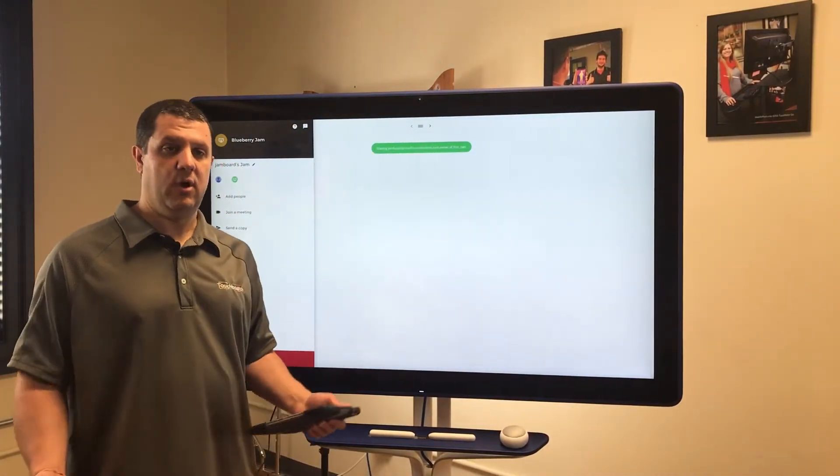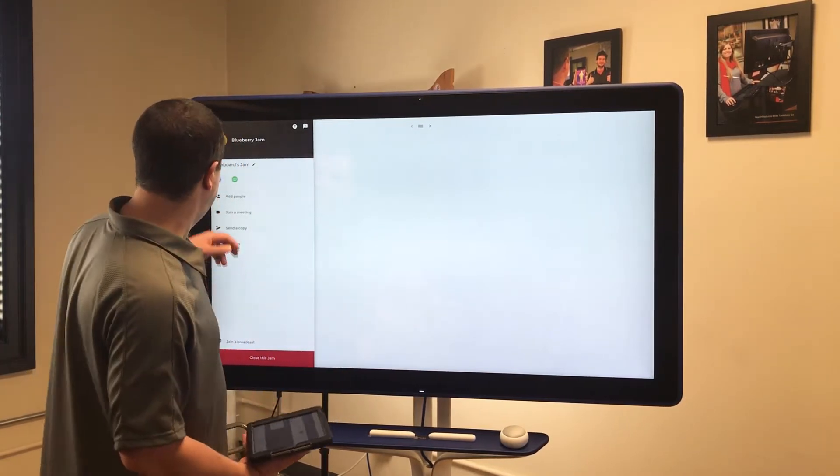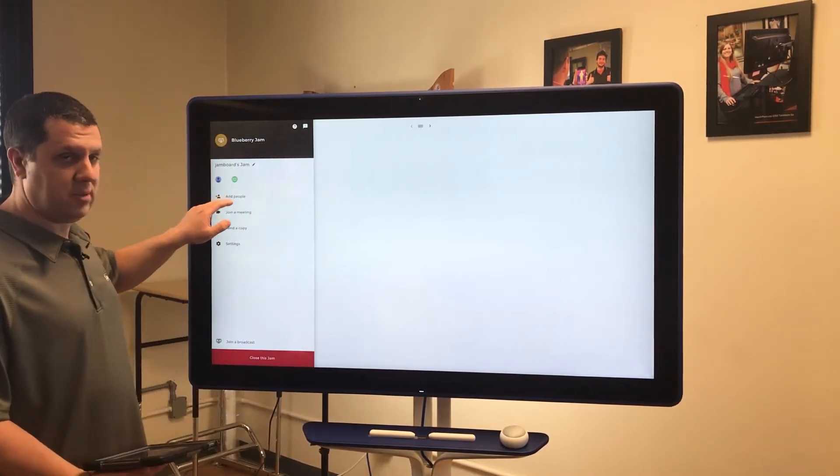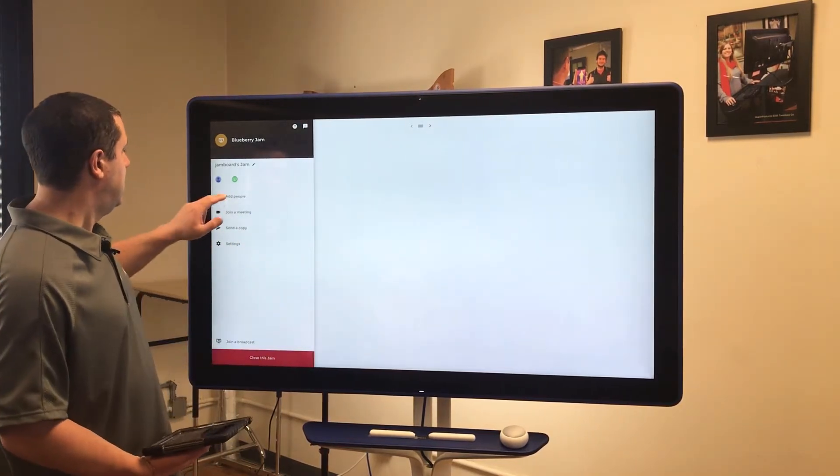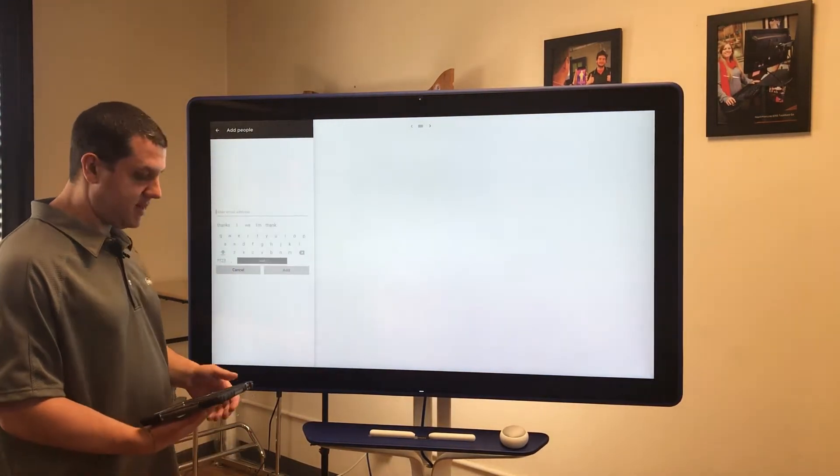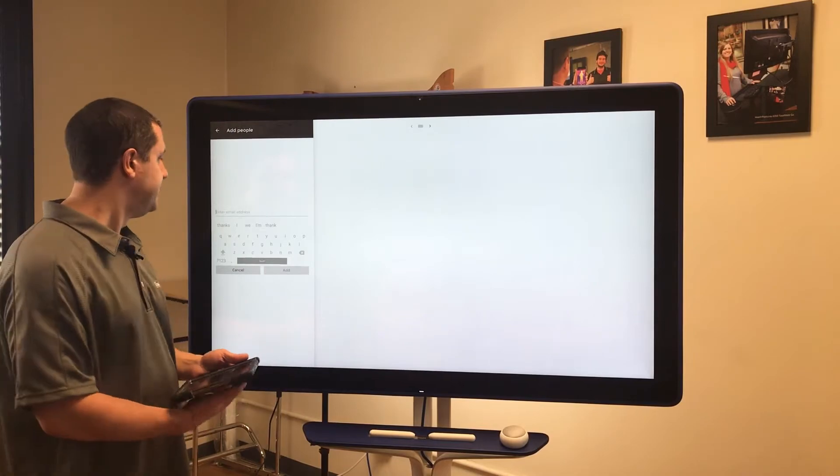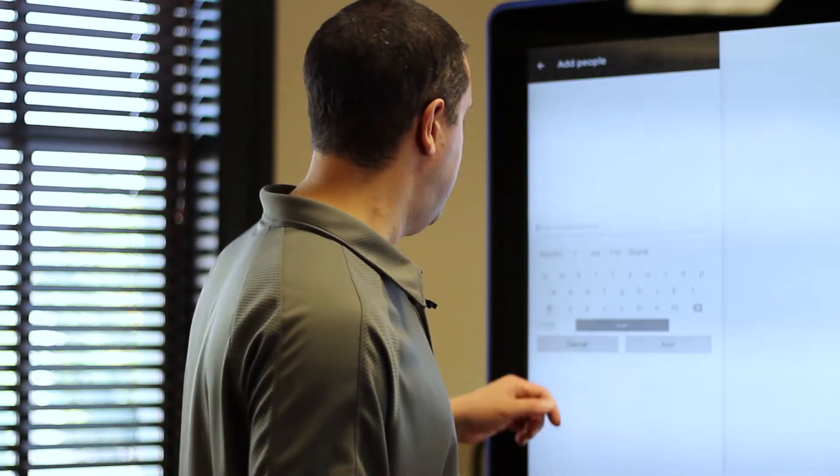All right so now that we have an owner assigned to it we can add collaborators and over here we can add people. We can also broadcast it out and add people that way. But like I said the best way to do it in my opinion is to add a collaborator who's using a tablet. And I'm just going to enter an email address for the app in my iPad here.